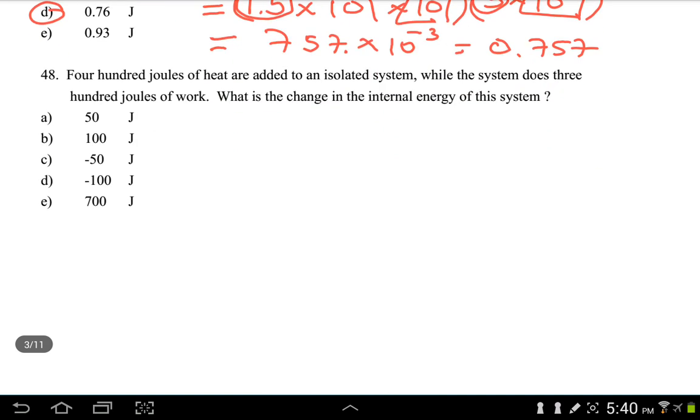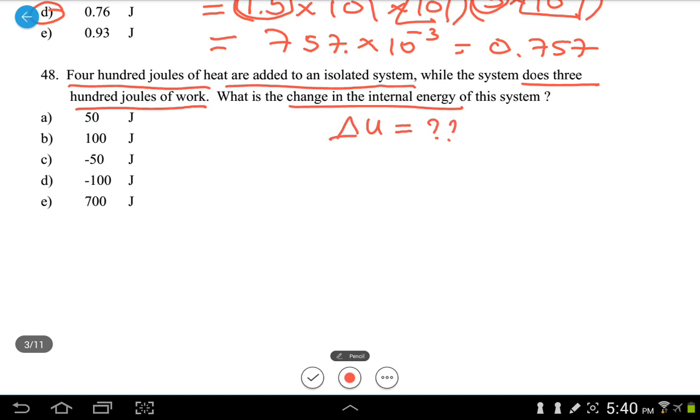Let's see number 48. Number 48 says 400 joules of heat are added to an isolated system. While the system does 300 joules of work, the question says, what is the change in internal energy of the system? The question is asking for delta U. This question relates to first law of thermodynamics, which says Q equals delta U plus W.